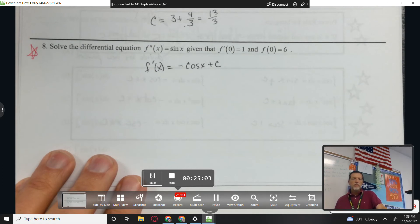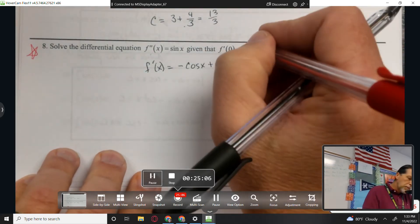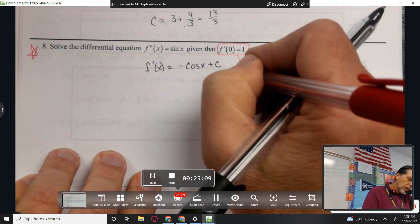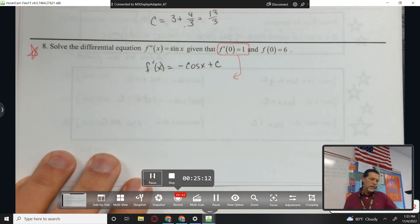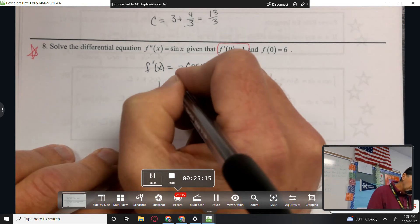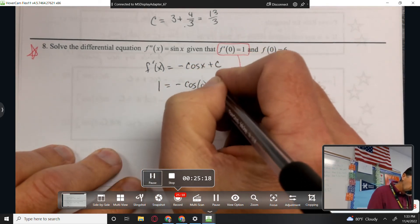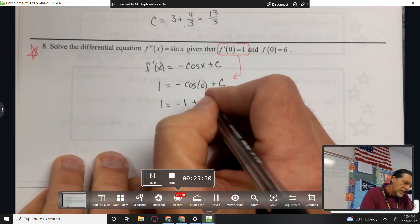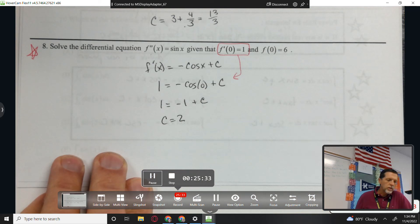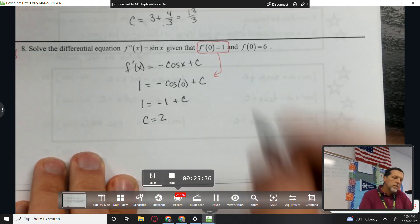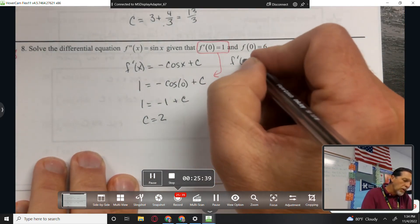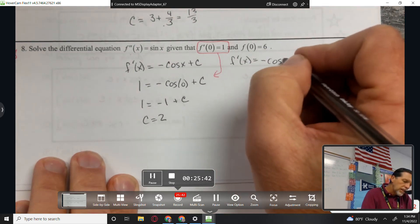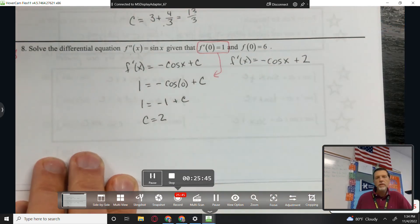So we're dealing with f prime. F double prime. Probably makes sense to use the information that talks about f prime. Okay, so I get 1 if I plug in 0. What's the cosine of 0? 1. Yep. So c equals 2. So that means I now know that f prime is negative cosine of x plus 2 because I figured out what c is.